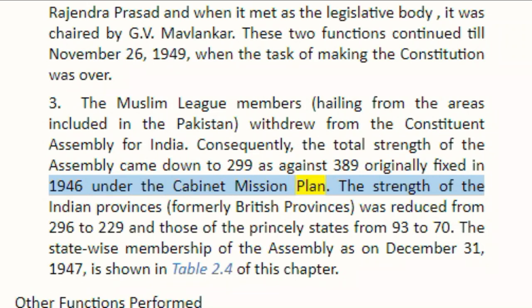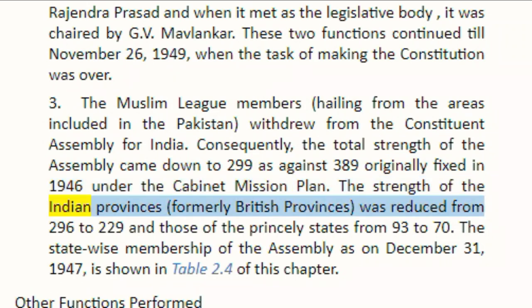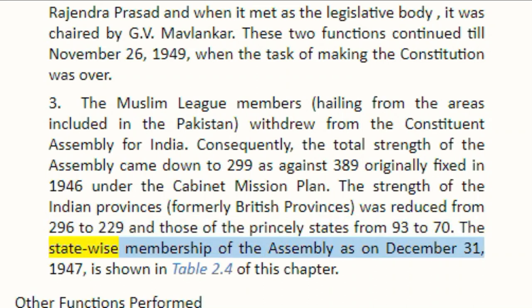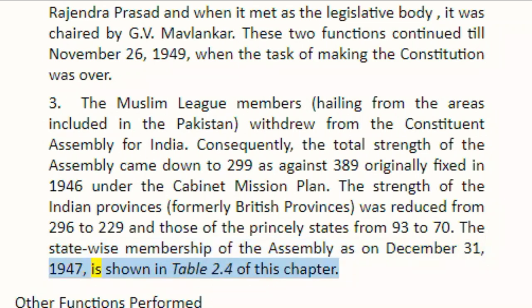The strength of the Indian provinces, formerly British provinces, was reduced from 296 to 229 and those of the princely states from 93 to 70. The state-wise membership of the Assembly, as on 31 December 1947, is shown in Table 2.4 of this chapter.